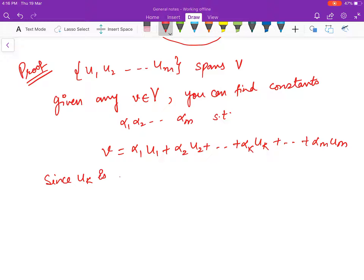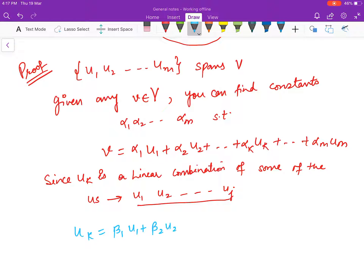...is a linear combination of some of the us, let us call these us as u1, u2, ..., uj. So it is not compulsory that they are listed in the front, you can just choose those ujs. So you have uk as beta_1 u1 plus beta_2 u2 plus ... plus beta_j uj.